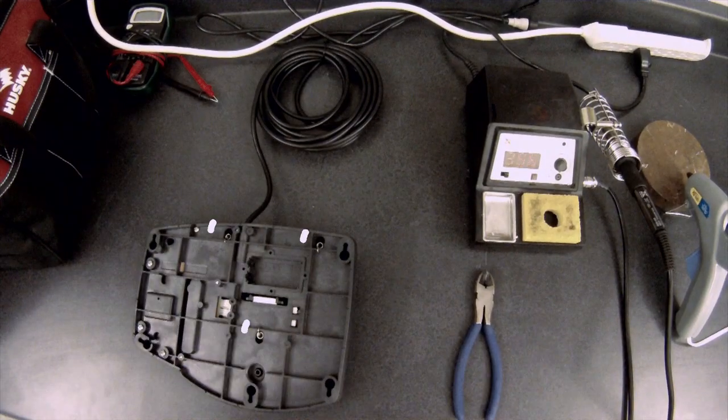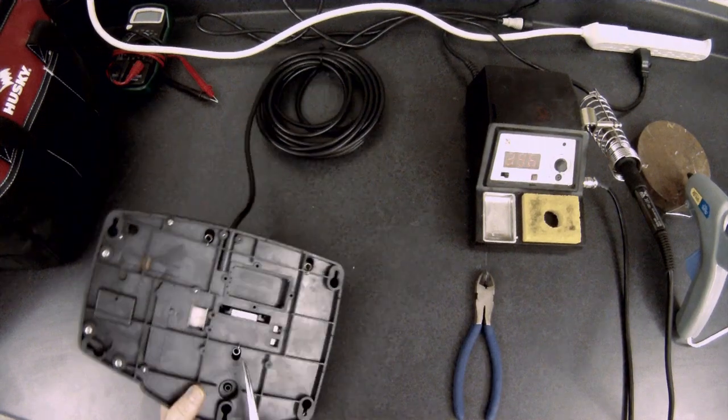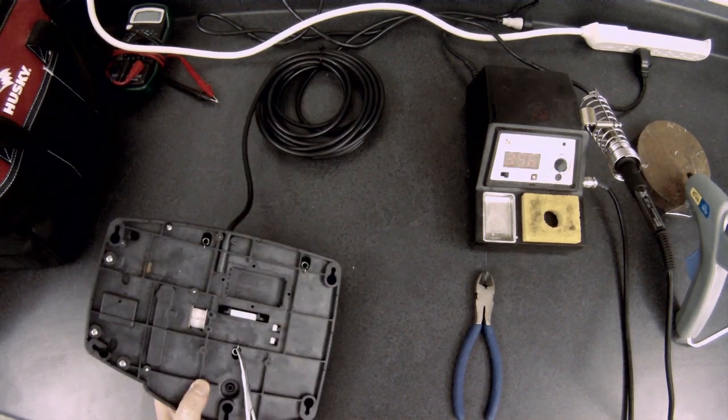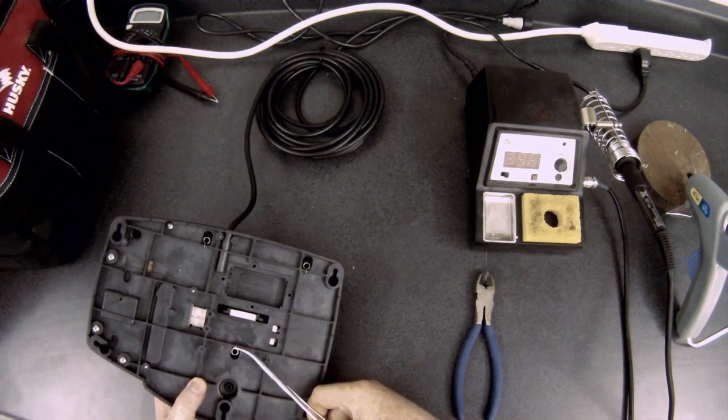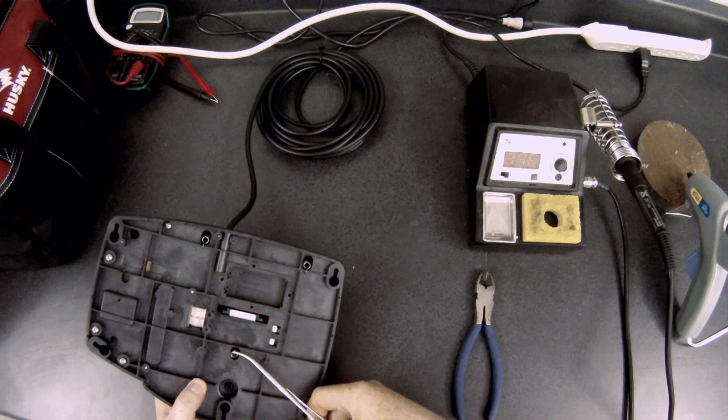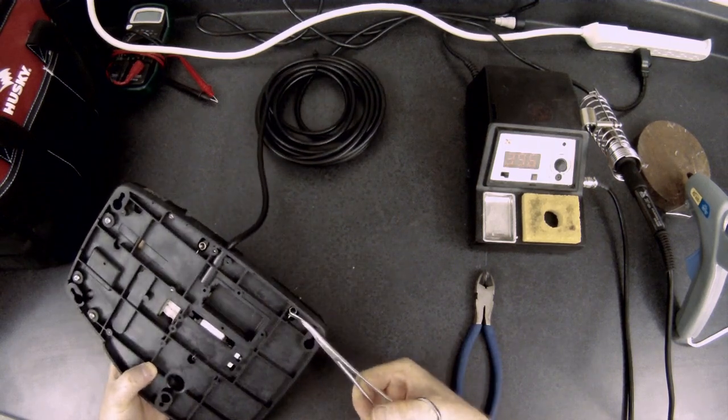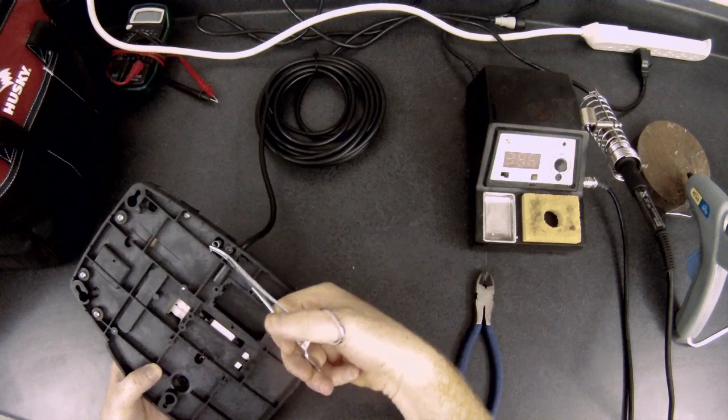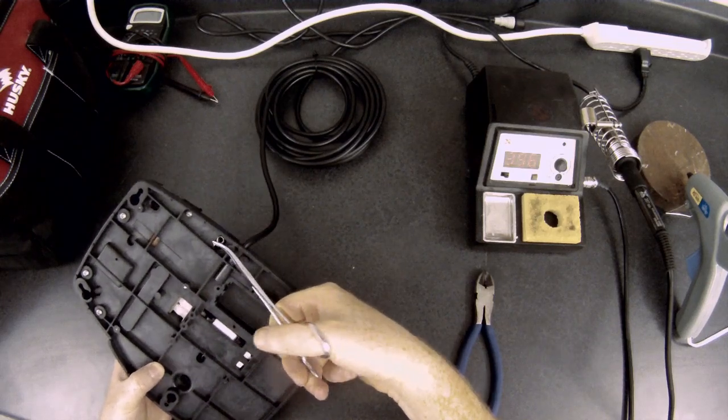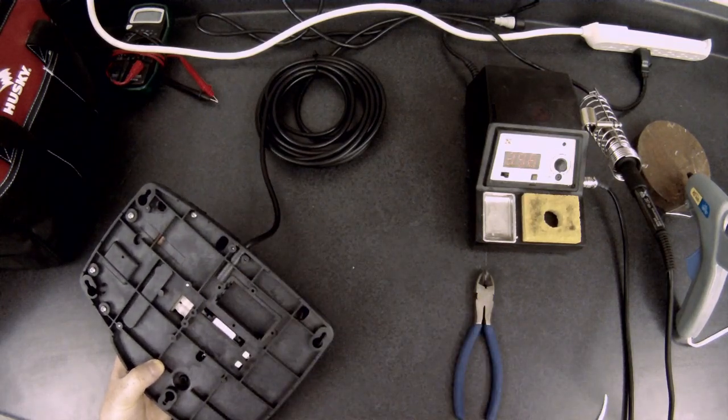There are three springs located on the bottom of the foot pedal. You'll need to remove these with a thin pair of needle nose pliers. Simply pull up on each spring and let it slide down inside of the pedal. Once you have removed these, the rocker panel on the top will simply lift off.